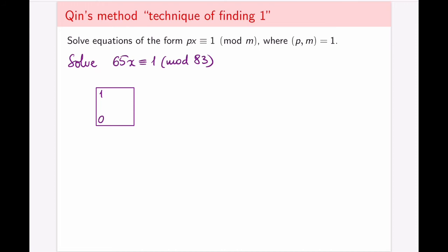The method consists of first of all, placing the given numbers into a square. So I'm going to start with a square. And in the left corners, I'm going to place one and zero. This is how the method always starts. And in the right corners, I'm going to place the numbers 65 and 83 in that order. So the first number goes on top, the second number goes on the bottom.